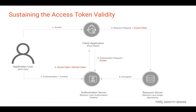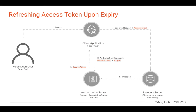This is not a user-friendly approach in some cases, and that's when the refresh token comes into the picture. When a client application sends an authorization request, it can get a refresh token from the authorization server, which can later be used to refresh the access token. When the access token expires, the client application can send a silent request to the authorization server to refresh the access token. In return, the authorization server will send a fresh access token.